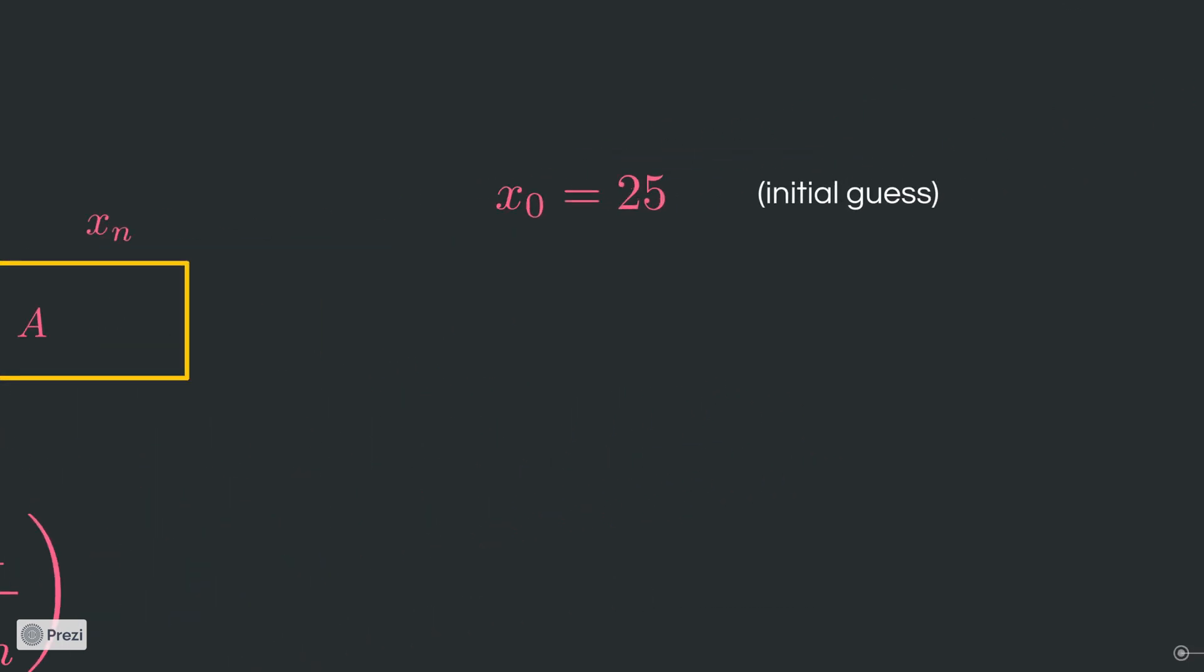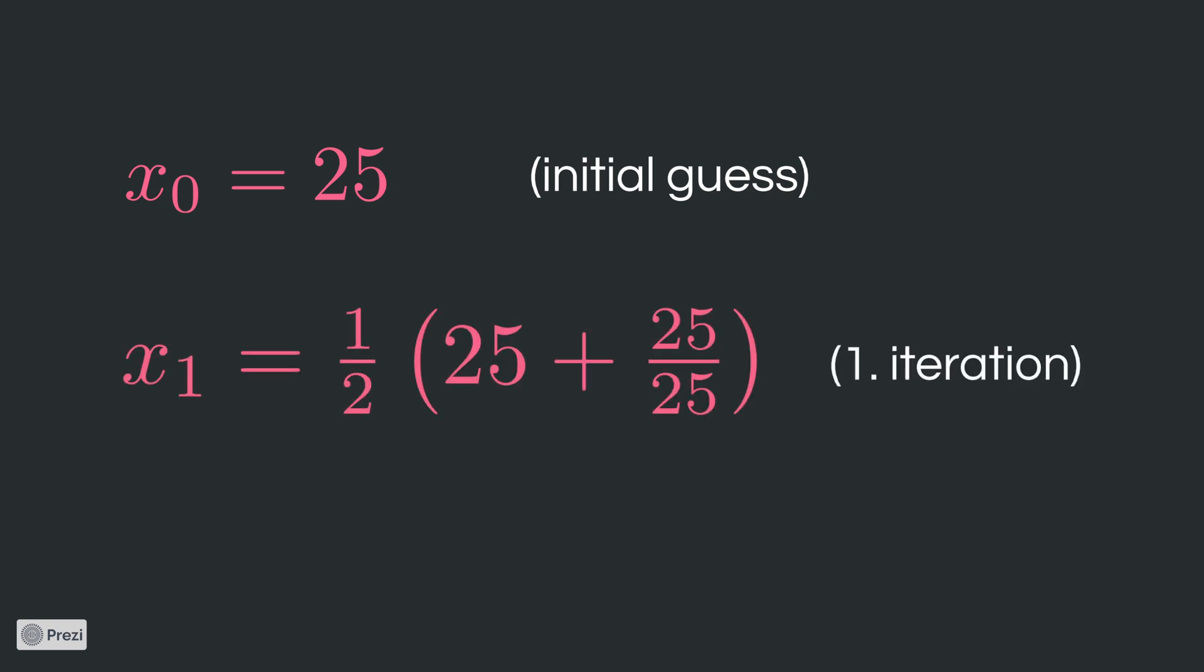So let's plug everything in for our example of 25. We start with 25 and average it in the first iteration. We have seen that one minute ago. It's just 13. 13 will then be used in the next iteration and so on and so forth.